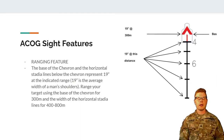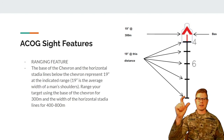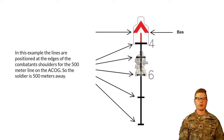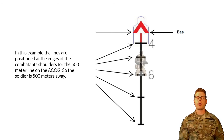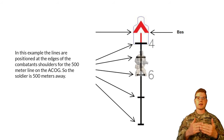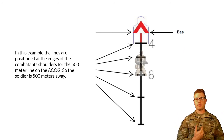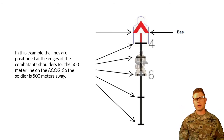This is really specifically for enemy combatant acquisition rather than taking time to measure vehicles — it's quick, like 'I see them, how far are we?' In this example, the lines are positioned at the edges of the combatant's shoulders at the 500-meter line on the ACOG, so the soldier is 500 meters away. Not everybody is going to be standing at 100-meter increments, so use your best estimate. With those lines at 500, if you're actually at 550, you're still hitting center mass — still hitting the torso. You can make a good estimation and do a little Kentucky windage if needed.